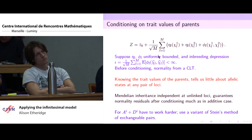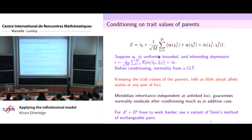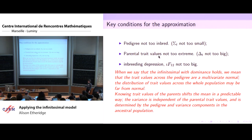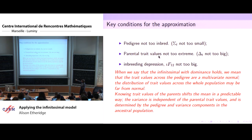When we do that, we find the conditions we need, and they're very much the same as the conditions Amandine wrote down. We need that the segregation variance is not too small — enough variability within families, our pedigree is not too inbred. We need parental trait values not too extreme. We need that the inbreeding depression is not too big, not just so the mean is well-defined, but also when we look at the errors in our normal approximation, inbreeding depression plays a key role in how rapidly we get convergence to a Gaussian distribution.